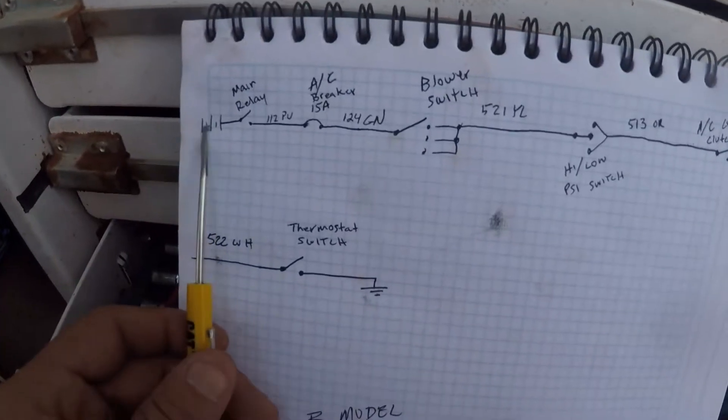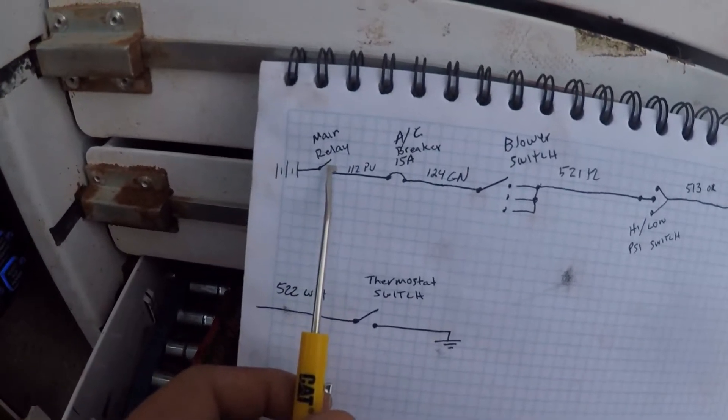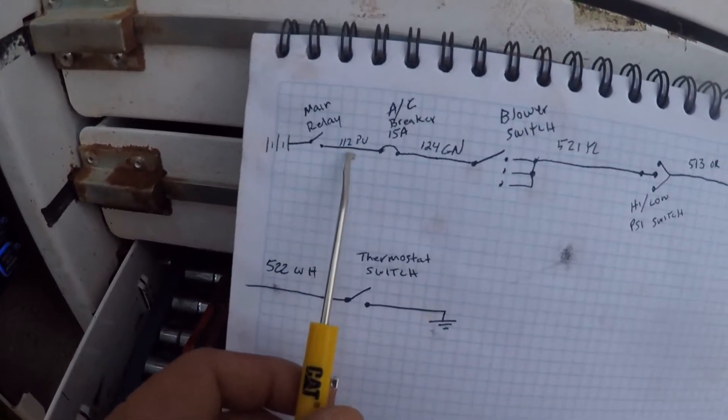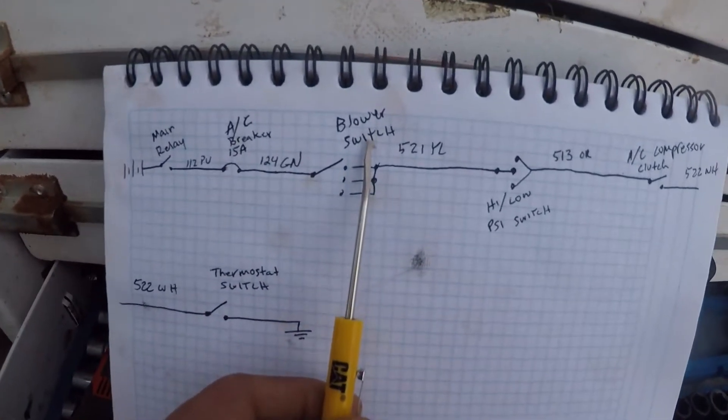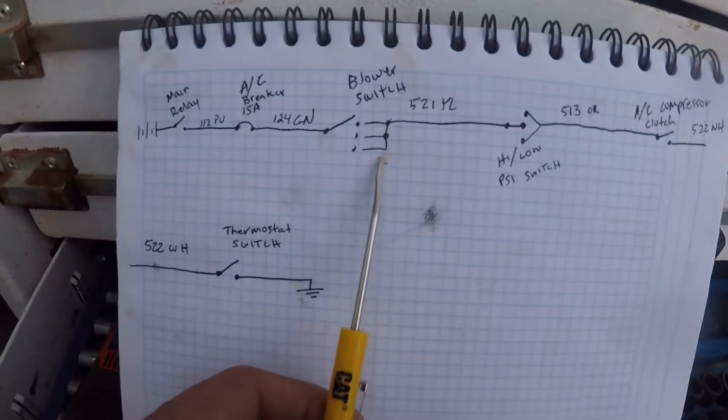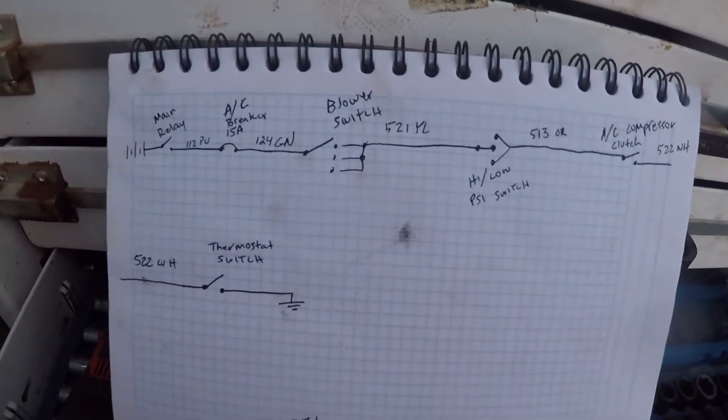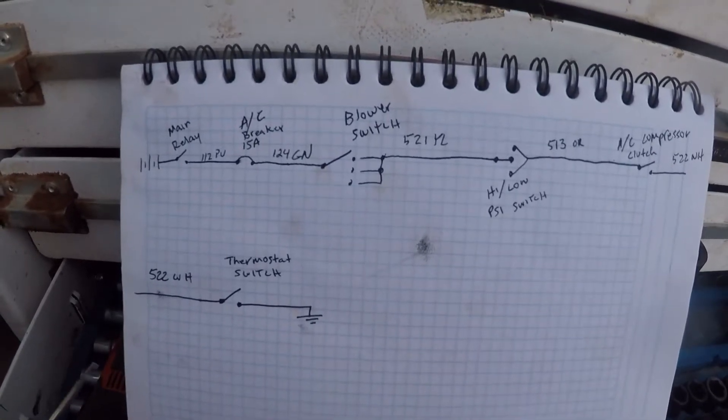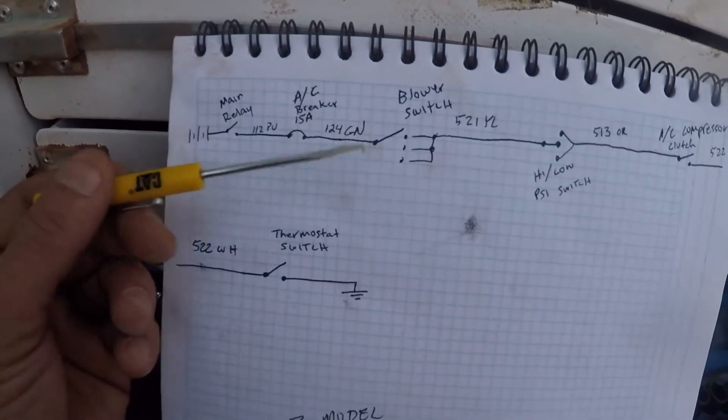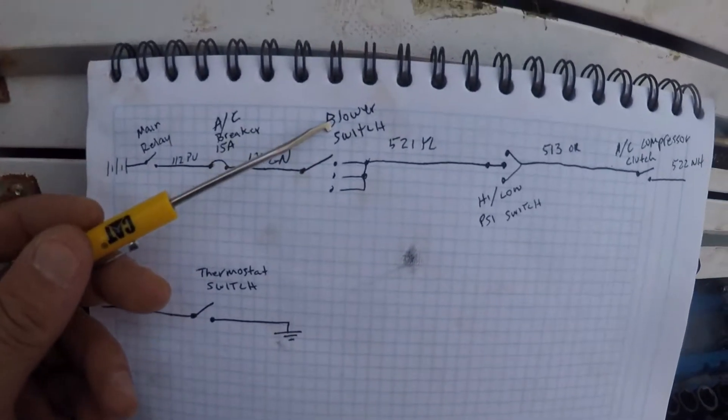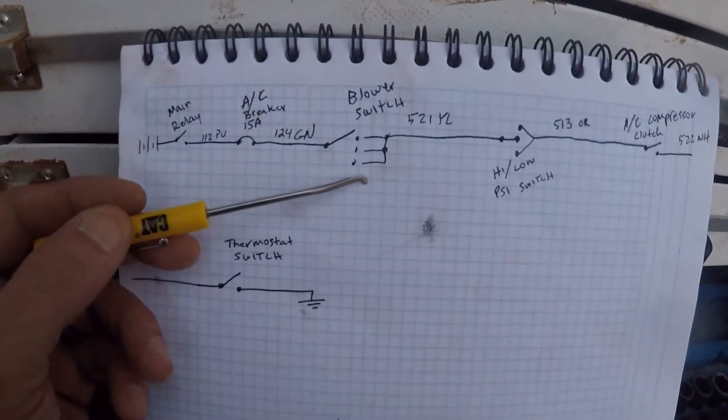I would like to redraw the schematic. Here's a schematic symbol for a battery, we've made our main relay just a switch. There's our wire 112, goes through our breaker, comes out 124 green, goes to our blower motor switch. I like to do it this way. I would study the schematic so I can learn how the circuit is supposed to work. We know the batteries are good, we know the main power relay is good, we know the breakers are good. But we've also learned that our blower motor switch has to be turned on to an AC setting, which it is.